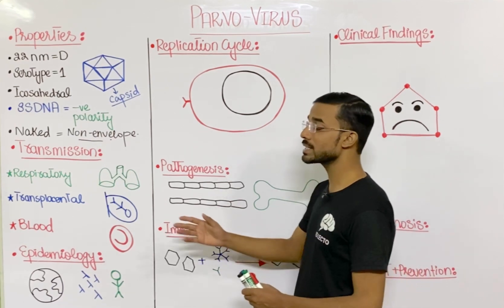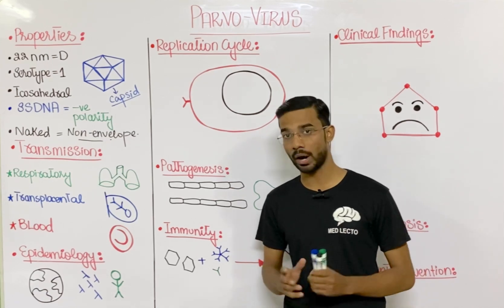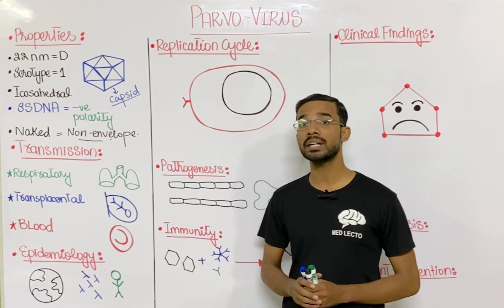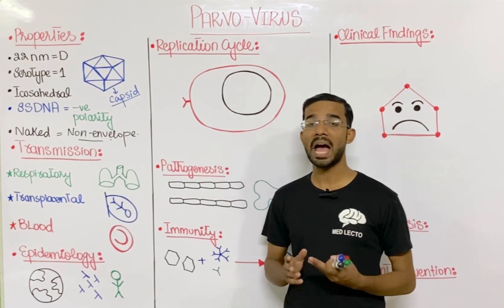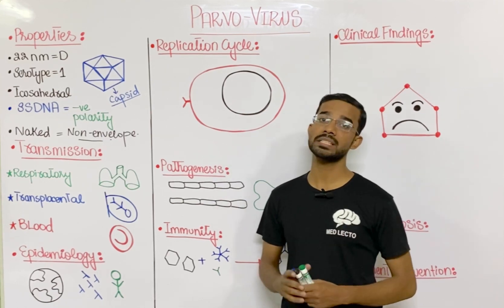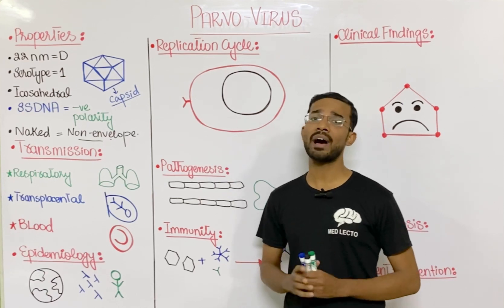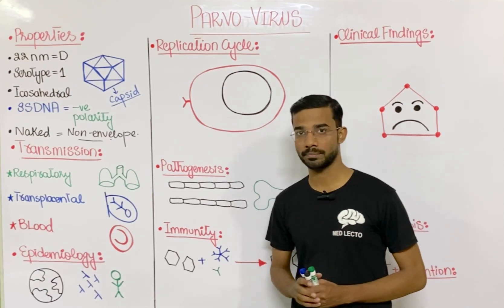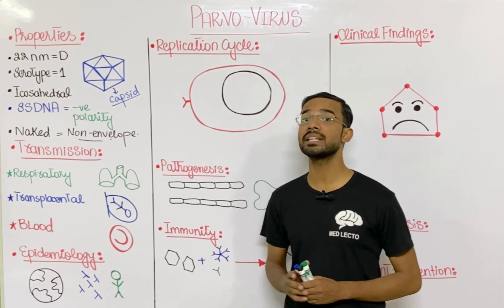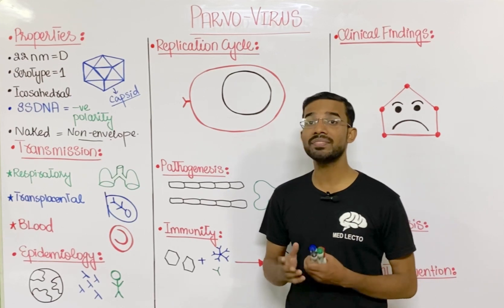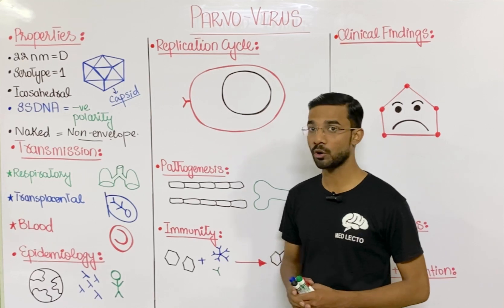Regarding epidemiology, the virus is present worldwide. Most importantly, people aged 18 years or older have antibodies against these viruses. The most important reservoir of parvovirus is humans. Keep in mind that canine parvovirus infects animals and does not infect humans.